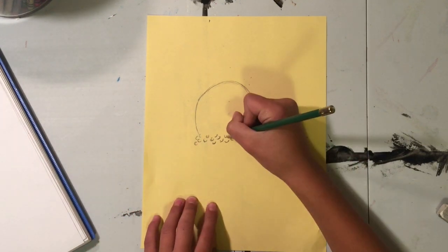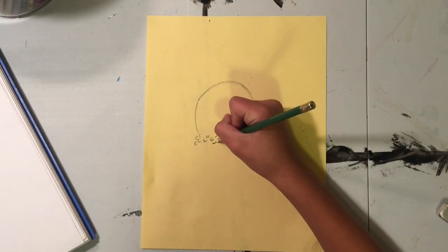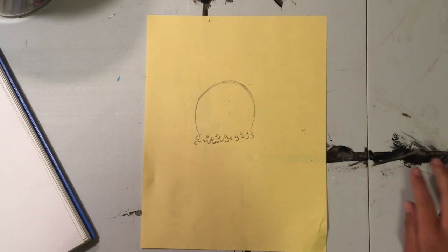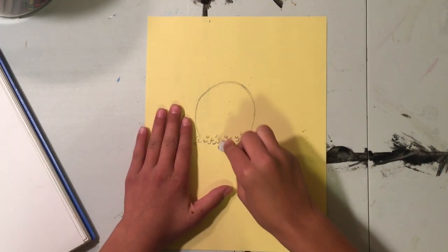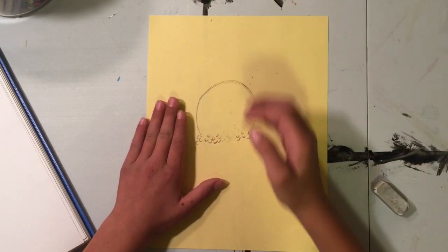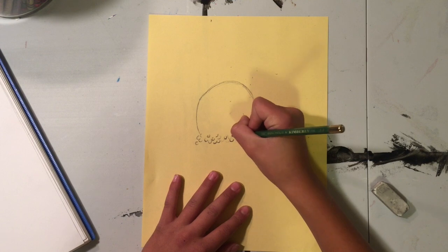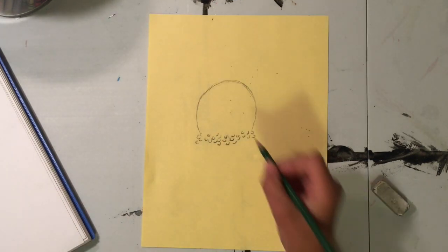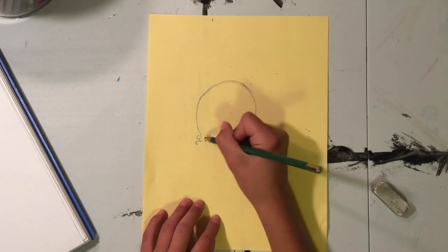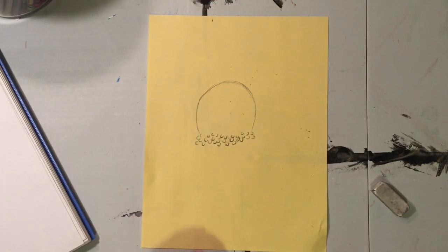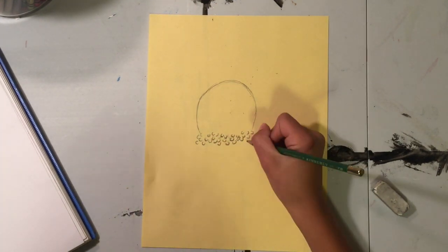And then you kind of just want to go around and make them look like they're connected, which you can erase some. And then for the middle you do more distant. So basically this is what it is gonna look like. So that's what it's gonna look like for the bottom of the ice cream cone.